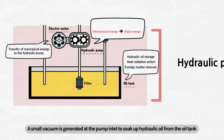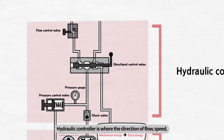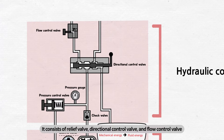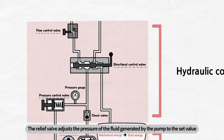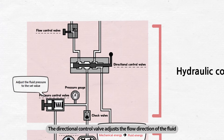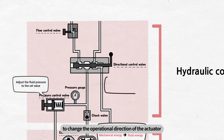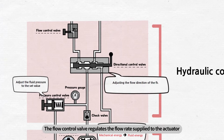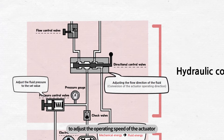Next is the hydraulic controller. The hydraulic controller is where the direction of flow, speed, and pressure of the high-pressure oil generated from the hydraulic generator is being controlled before it reaches the actuator. It consists of a relief valve, directional control valve, and flow control valve. The relief valve adjusts the pressure of the fluid generated by the pump to the set value. The directional control valve adjusts the flow direction of the fluid to change the operational direction of the actuator. The flow control valve regulates the flow rate supplied to the actuator to adjust its operating speed.